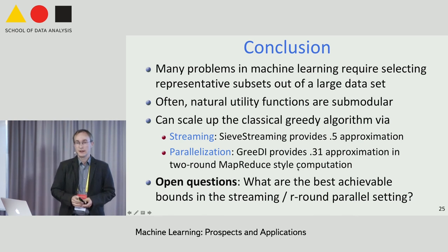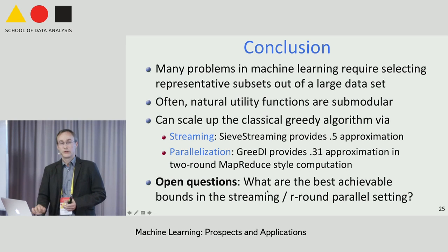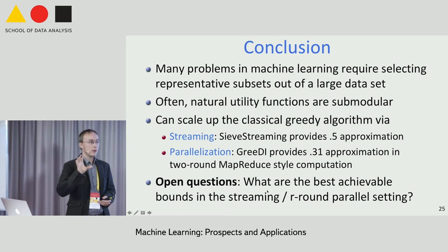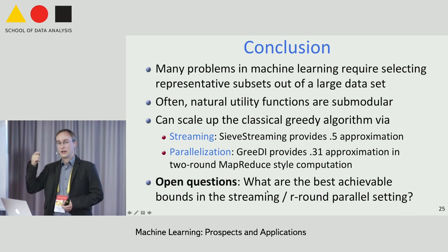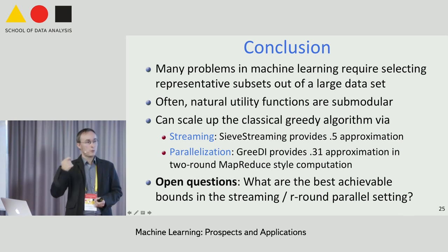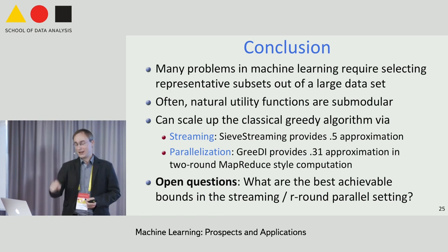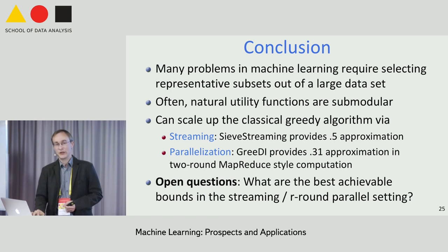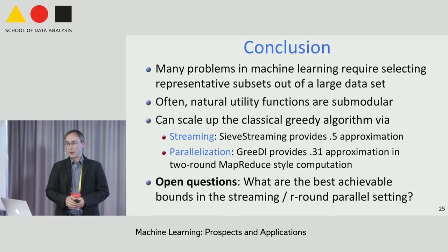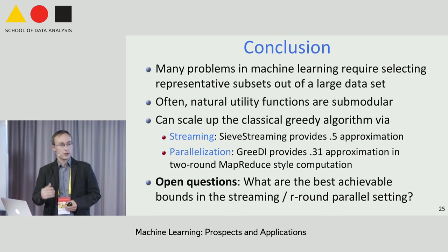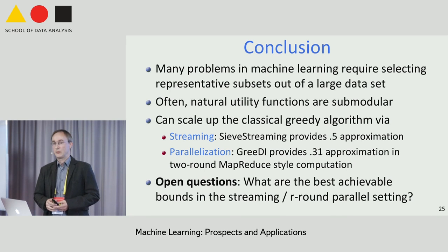There are also some interesting open theoretical questions. For example, the streaming algorithm gives a 1/2 approximation, while the information-theoretically optimal polynomial-time constant is 1 − 1/e ≈ 63%. We don't know whether it's possible to close that gap in the streaming setting. The same question applies for constant-round parallel computation. Thanks.